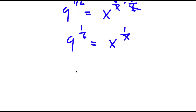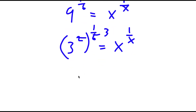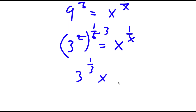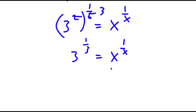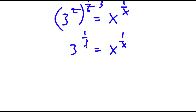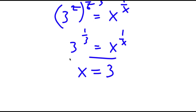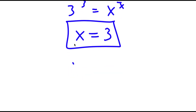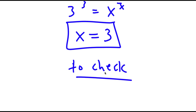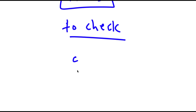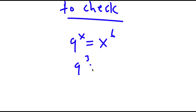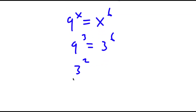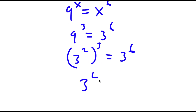Now, 9 is the same thing as 3 squared. So I get 3 squared to the power of 1 over x is equal to x to the power of 1 over x. 2 and 6 make 3, so I get 3 to the power of 1 third is equal to x to the power of 1 over x. Notice how this is in the form: a number to the power of 1 over that same number equals x to the power of 1 over x, meaning x is simply equal to 3. To check: 9 to the power of 3 equals 3 to the power of 6. Since 9 = 3 squared, we get 3 squared to the power of 3, which is 3 to the power of 6 equals 3 to the power of 6. ✓